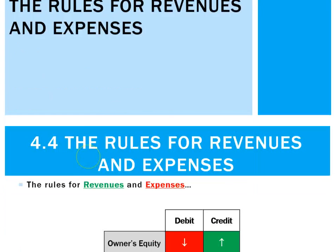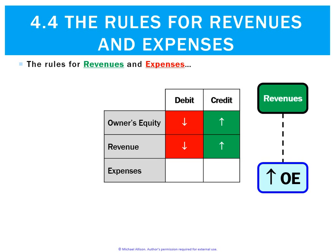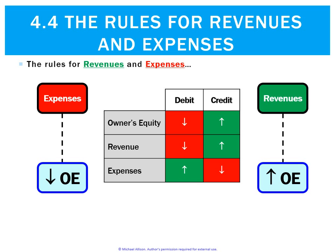Let's look at the rules for revenues and expenses. We need to look at the rule for owner's equity first. Owner's equity goes up on the credit side but decreases on the debit side. We learned earlier that revenues make owner's equity go up, so revenues also increase on the credit side. Conversely, expenses make owner's equity go down, so expenses increase on the debit side.